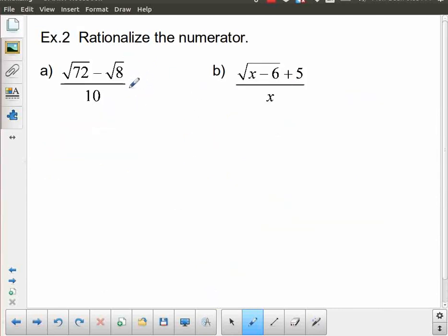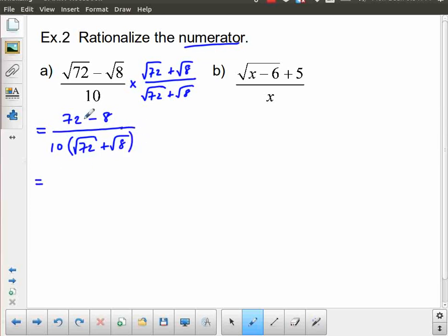Now, sometimes you will be asked to actually rationalize the numerator, rather than the denominator. And we'll see later on, as we continue with this unit, why that could end up being useful. So, it's the same idea, though. So to rationalize the numerator in this case, I just multiply by the conjugate of the numerator. So that's going to be √72 plus √8 over √72 plus √8. And I get a difference of squares here. So this becomes 72 minus 8 over, and I don't like to multiply this 10 into this entire term yet, because sometimes I'm looking for something to divide out between the numerator and denominator. So I'm just going to leave that as √72 plus √8.